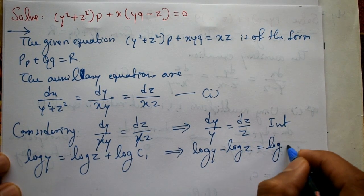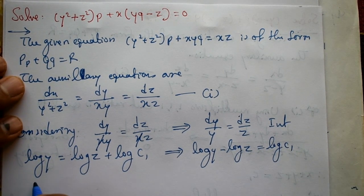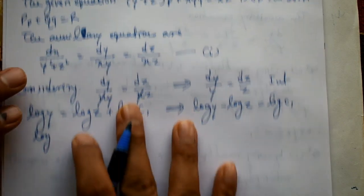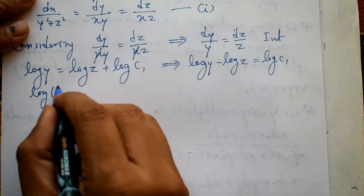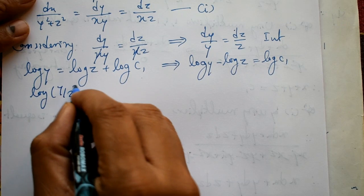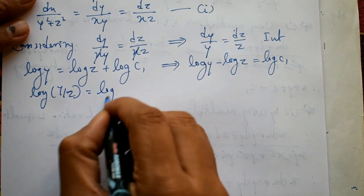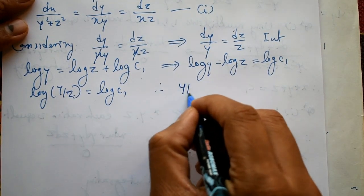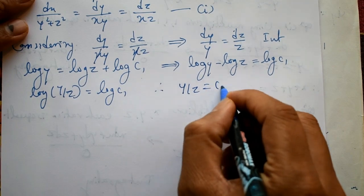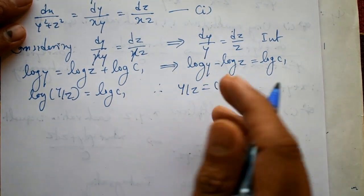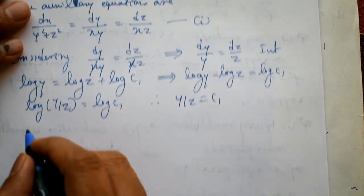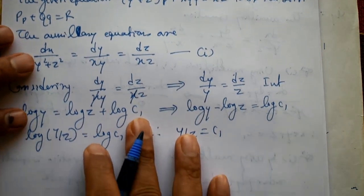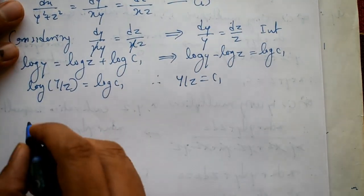Shifting to the left-hand side: log y − log z = log c1. Using the log property: log(y/z) = log c1, therefore y/z = c1. That gives us the first solution. We need one more, so consider equation number one again.